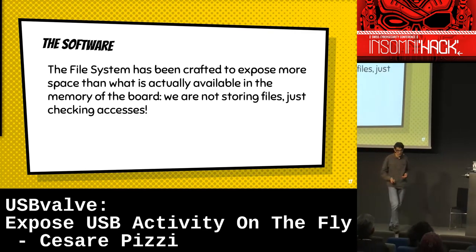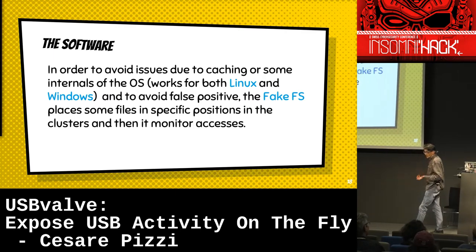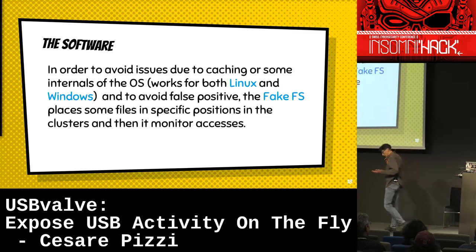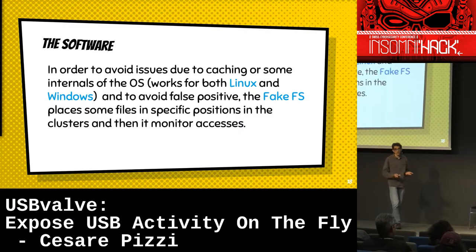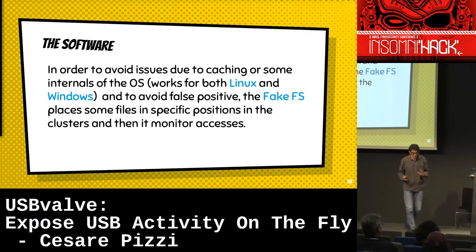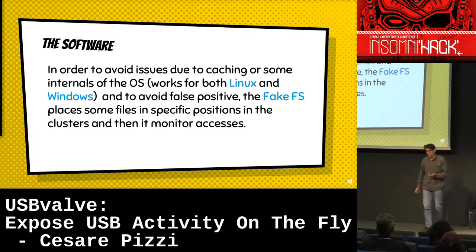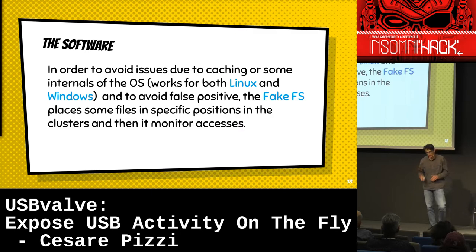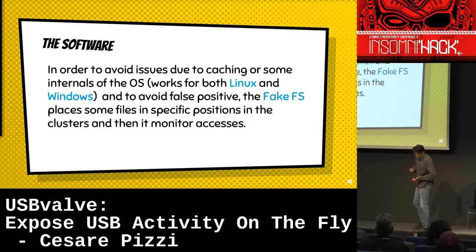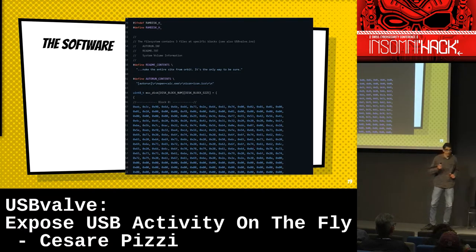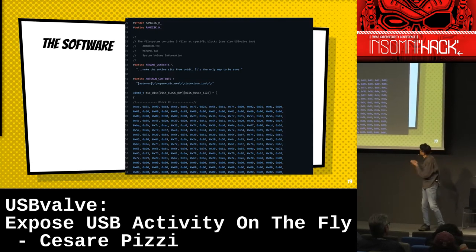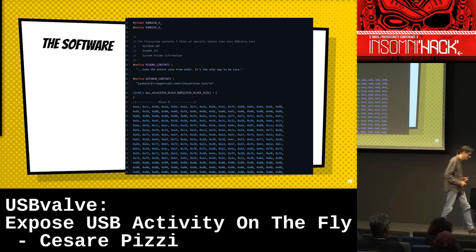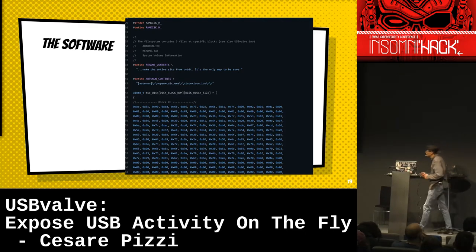I had to craft the file system carefully in order to have it working properly on both Linux and Windows — placing files in specific clusters in specific places to avoid caching issues and other things we'll see during the presentation. This fake file system is already done and ready to be loaded. You can also create your own, as we'll see at the end of the presentation. And the fake file system is just a giant array — nothing is rocket science. It's a giant array with things placed in the proper positions.